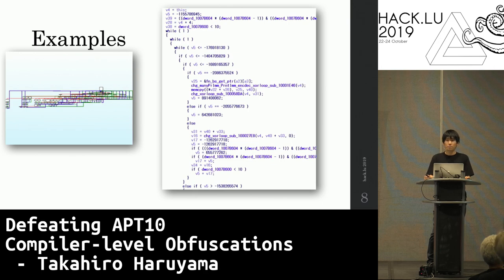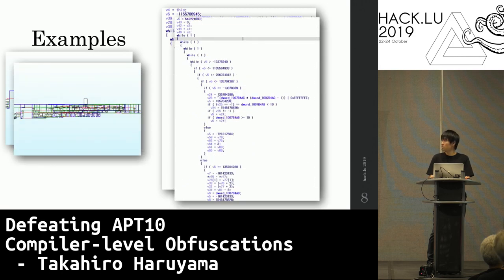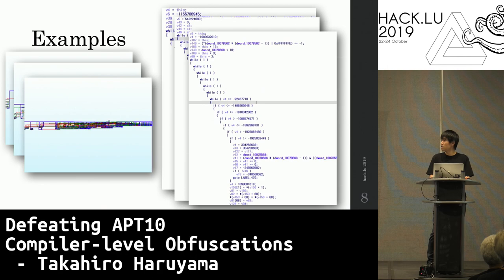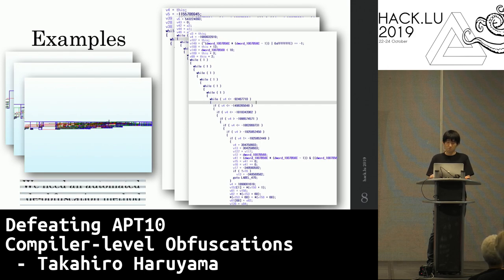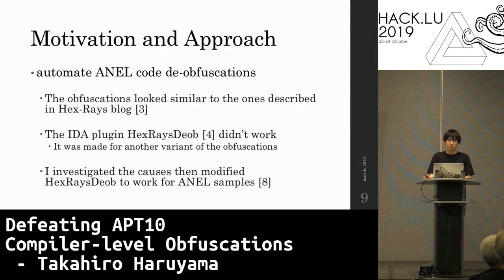The previous example function is very simple, so we can read it manually. But there are more complicated functions in the samples. Manual analysis for those functions is painful and time-consuming. We need an automated de-obfuscation result. My motivation is to automate ANL code de-obfuscations.